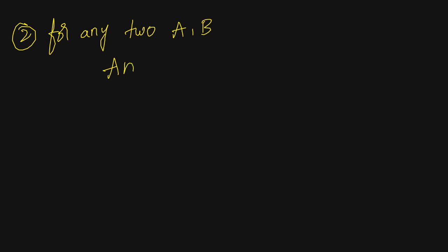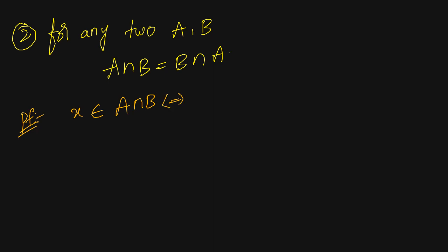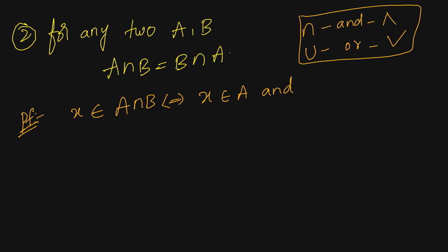Now let us consider the second commutative law. For any two sets A and B, A intersection B is the same as B intersection A. For proving this, I will use the same equality property. Let us consider one element x from A intersection B. The meaning of A intersection B: x belongs to set A and x belongs to set B — x is an element that lies in both sets.